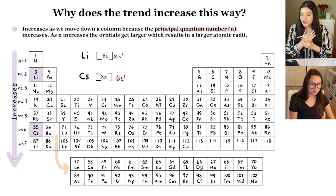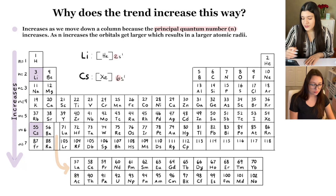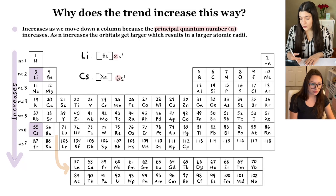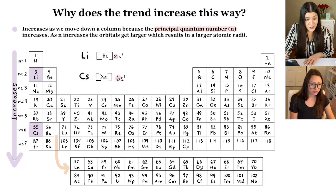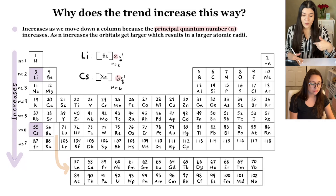Looking at electron configurations, we can compare lithium and cesium, both highlighted in purple. The only thing changing between them is not the type of orbital — it's just our n value that's increasing. And that's the main reason why atomic radius increases as you move down a column.